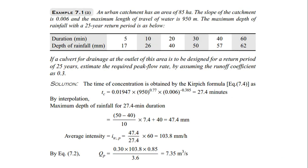Example: an urban catchment with area 85 hectares, slope 0.006, length of travel L = 950 m, maximum depth of rainfall for a 25-year return period given as 17, 26, 40 mm for increasing durations. We have to design a culvert for a 25-year return period and estimate the peak flow rate QP with runoff coefficient given.